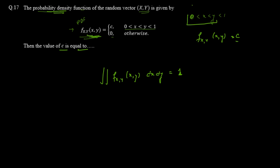Since we have written dx first, the inner limits are for x from 0 to y. For y, we take the outer limits from 0 to 1. So we set up the double integral of c dx dy equal to 1, with x going from 0 to y and y going from 0 to 1.